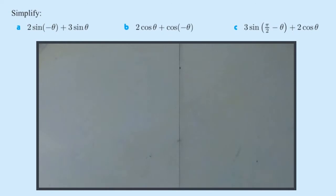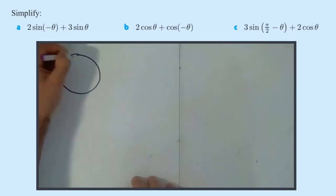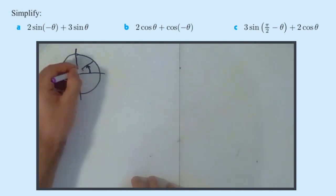For the negative angle formulas, if we just draw this really quickly, if we're interested in -θ, well, say that's θ. That can be θ. -θ will be the same angle, but it goes backwards instead of forward, so that would be -θ.